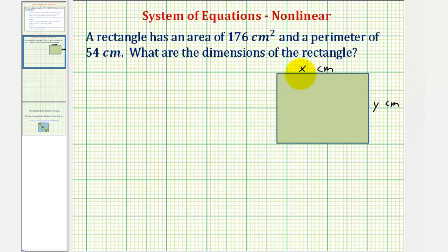Because the area formula of a rectangle is length times width, we know that x times y must equal 176.